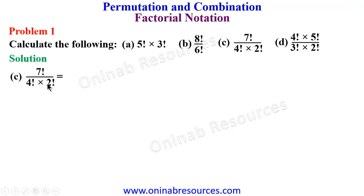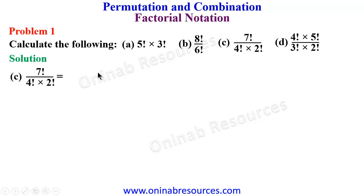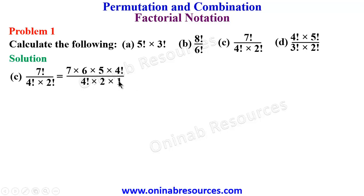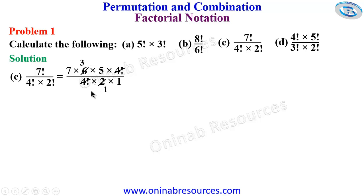For part c, 7 factorial divided by 4 factorial times 2 factorial: since we have 4 at the denominator, we expand as 7 times 6 times 5 times 4 factorial over 4 factorial times 2 times 1. The 4 factorial cancels, leaving 2 going into 1 and 2, giving 3. So we have 7 times 3 times 5 which gives 105.